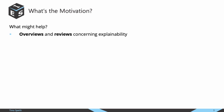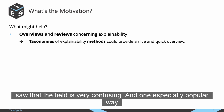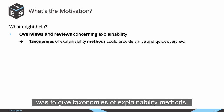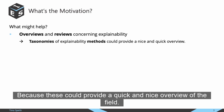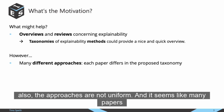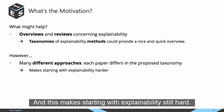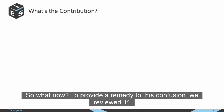What might help in this case? In recent years there have been many overviews and reviews concerning explainability, because researchers saw that the field is very confusing. One especially popular way was to give taxonomies of explainability methods, which could provide a quick and clear overview of the field. However, since the research landscape is so confusing, the approaches are not uniform, and many papers propose different taxonomies, making getting started with explainability still hard.